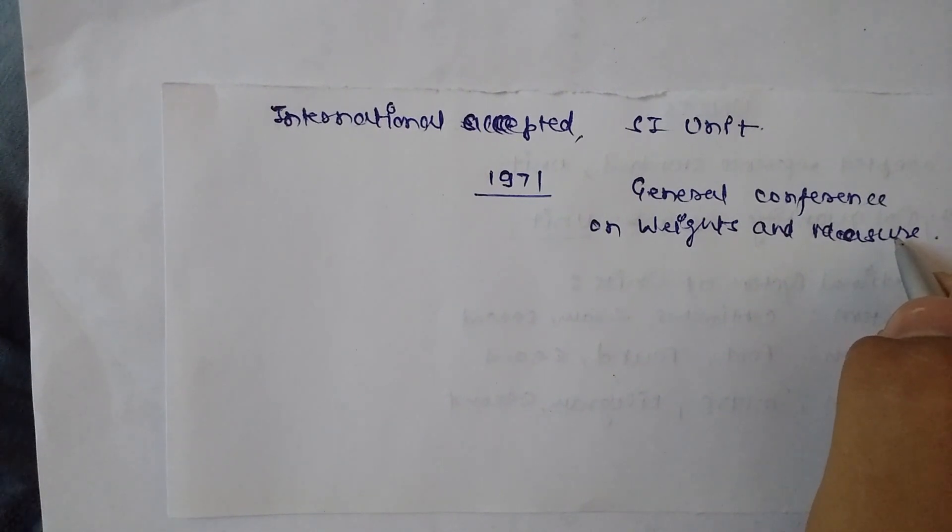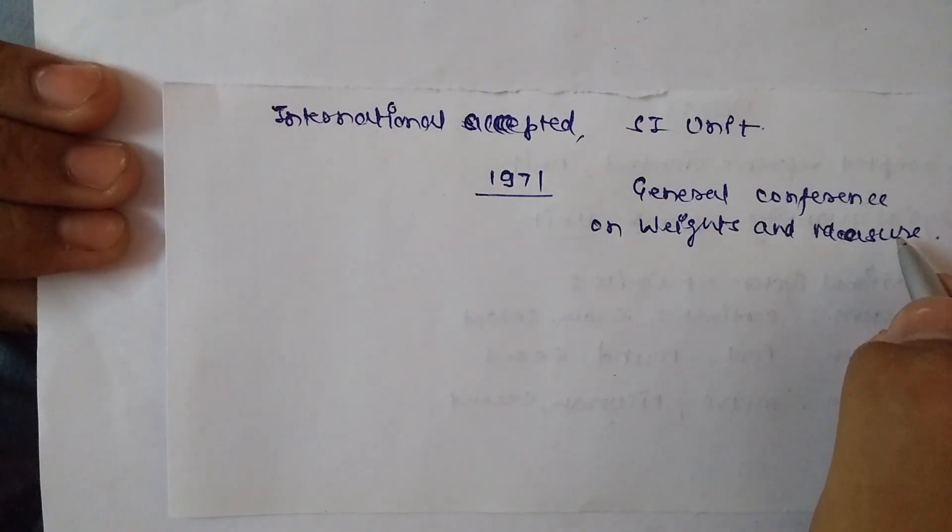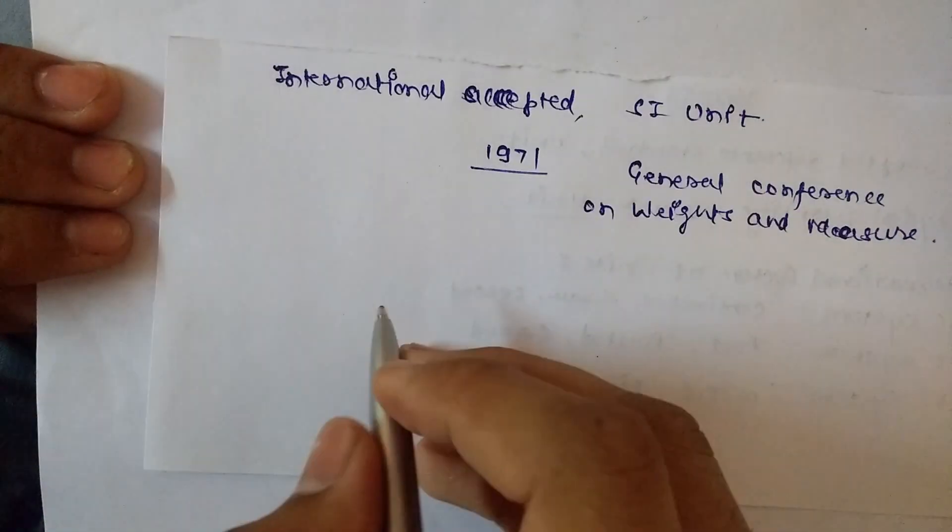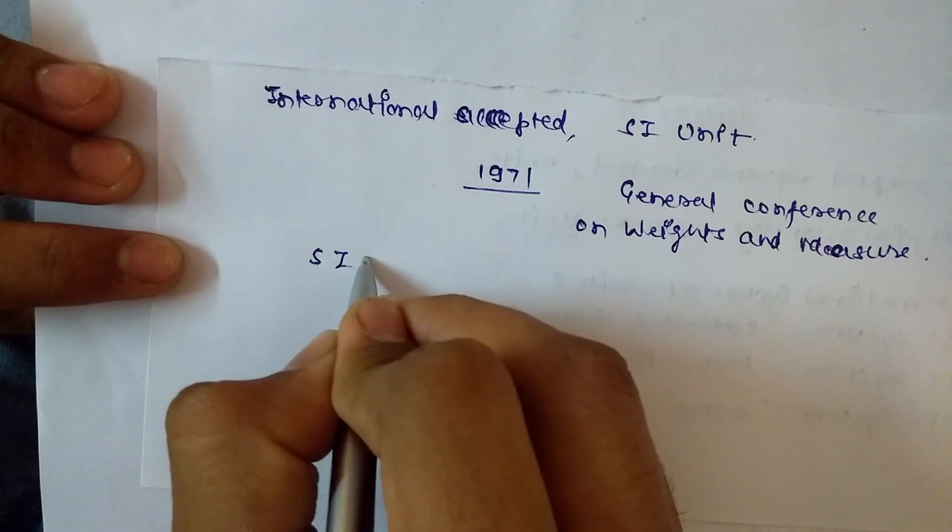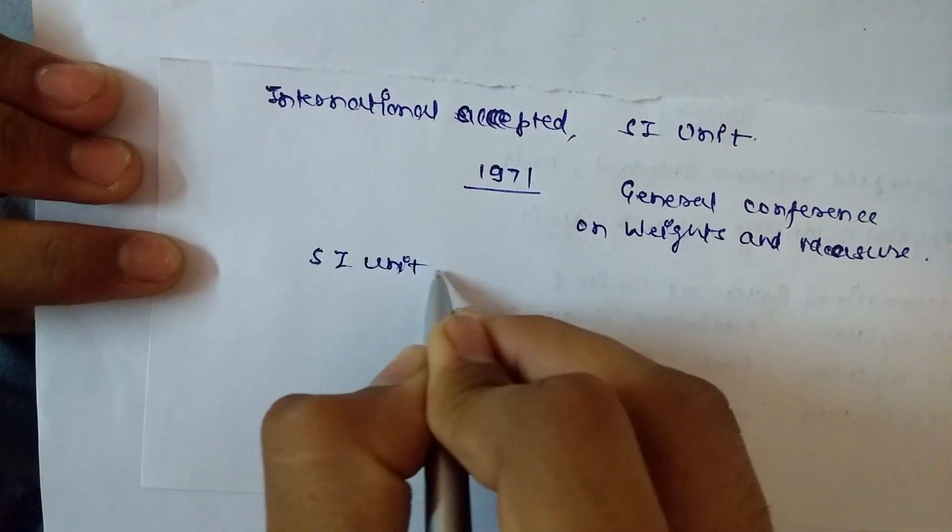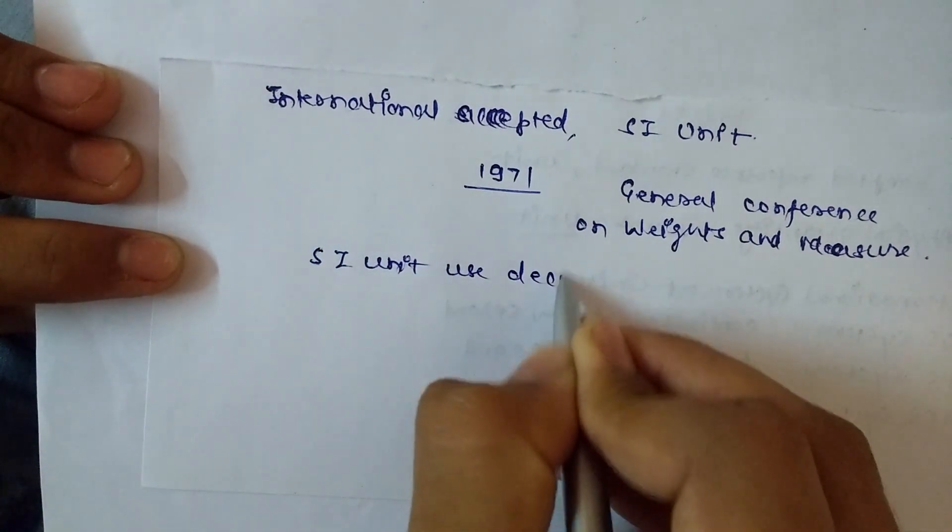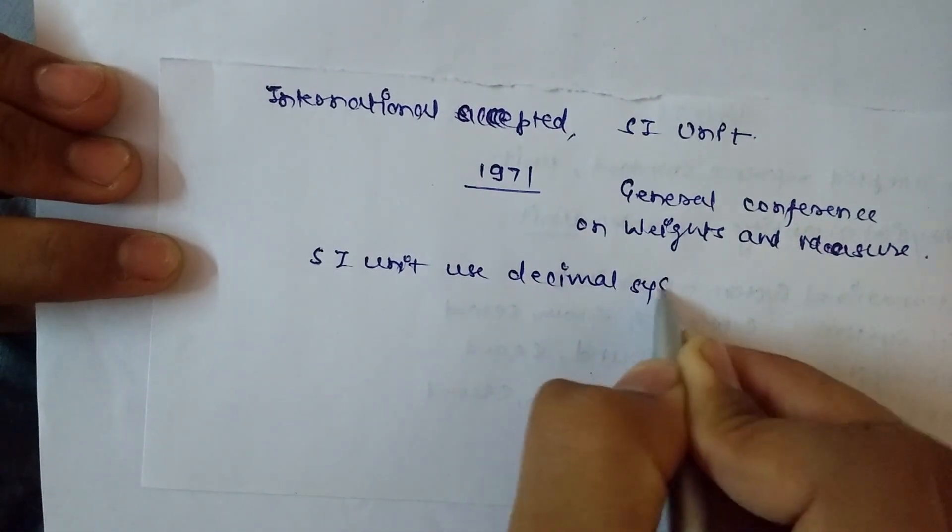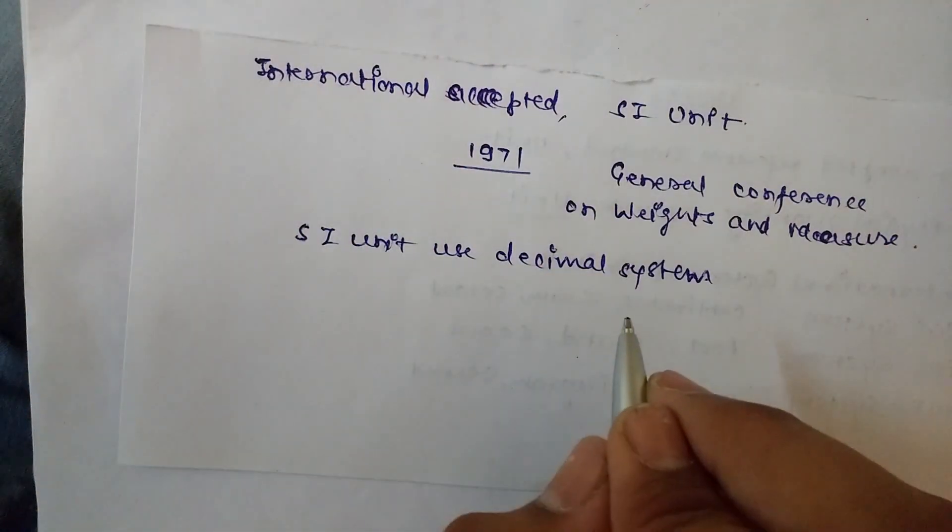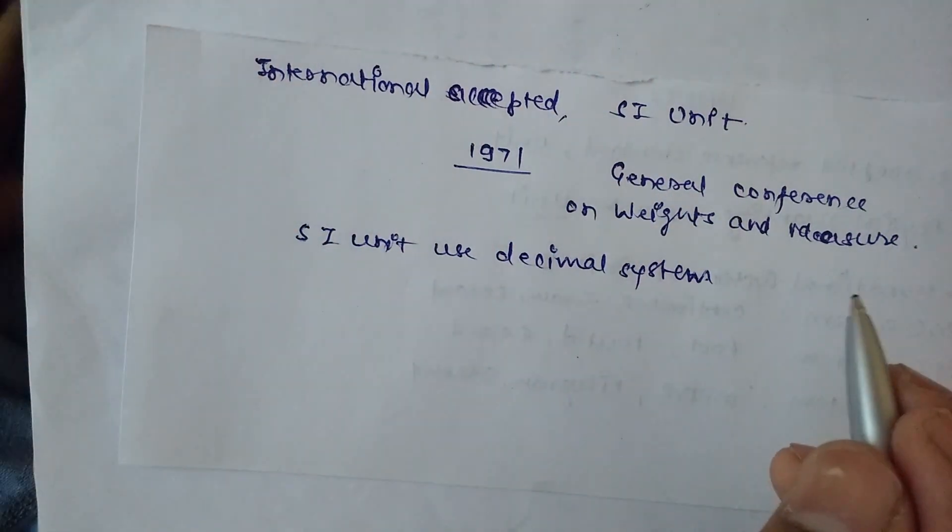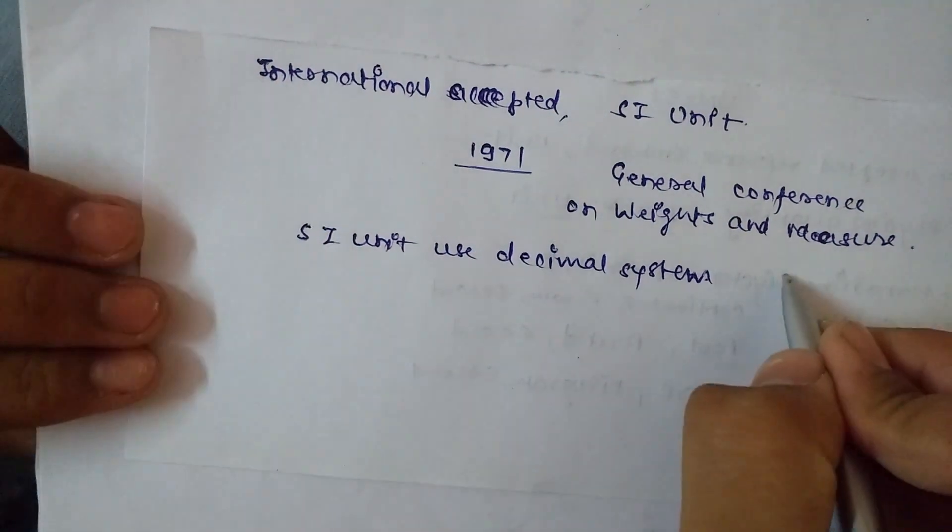SI unit uses the decimal system, and because of the use of the decimal system, conversion within the system is quite simple. That's why the SI unit is preferred.